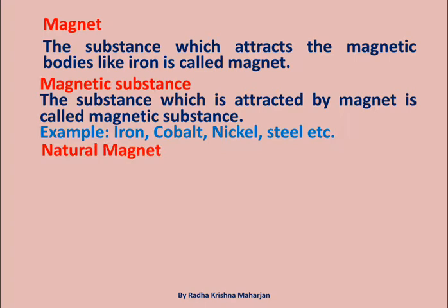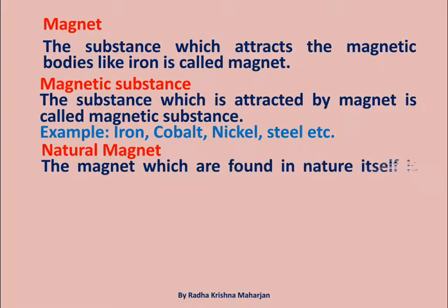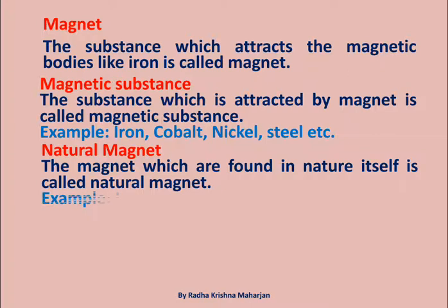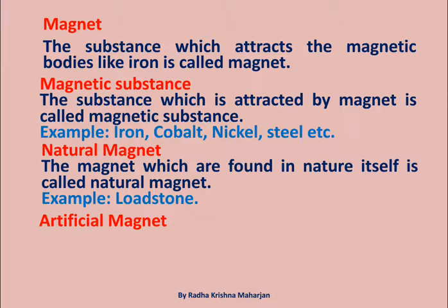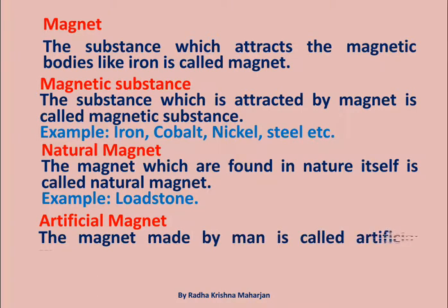Natural Magnet: The magnets which are found in nature itself are called Natural Magnets. Example: Loadstone. Artificial Magnet: The magnet made by man is called an Artificial Magnet.